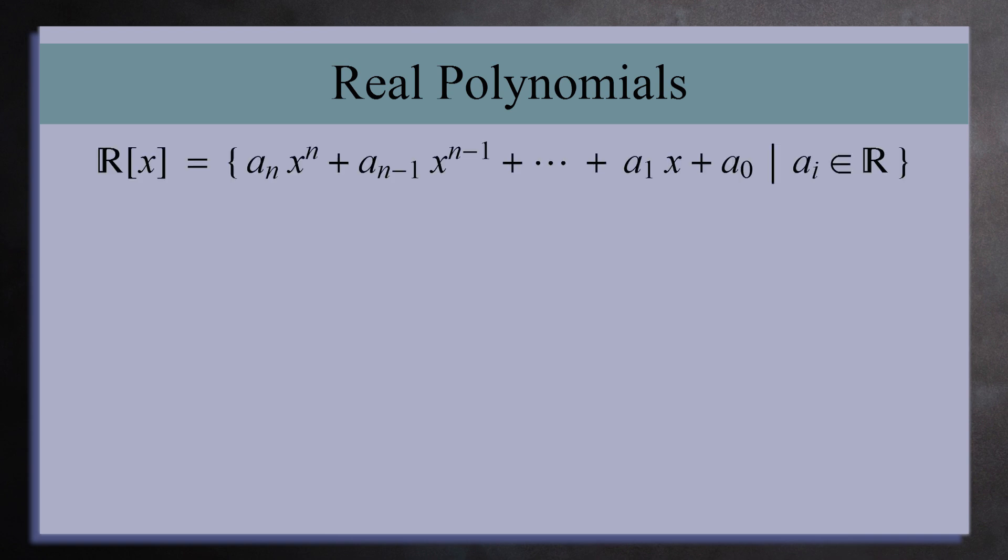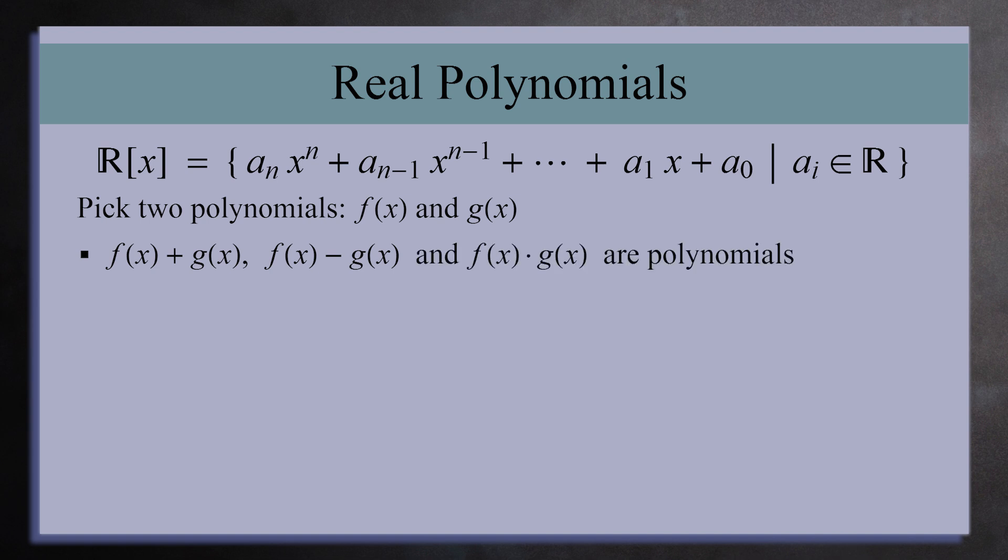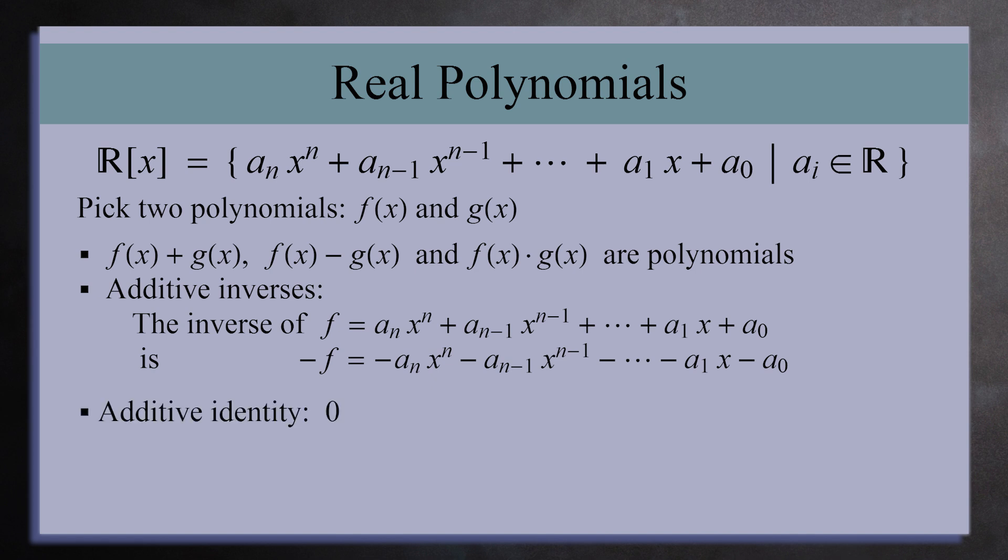Another example of a ring is a set of polynomials with real coefficients. You can freely add, subtract, and multiply any two polynomials, and you'll get a third polynomial. Each polynomial has an additive inverse. For any polynomial f, its additive inverse is a polynomial where you take the opposite of each term. The additive identity is 0. Don't forget that 0 is a polynomial.